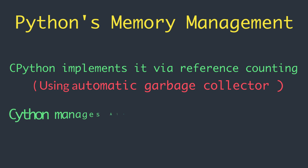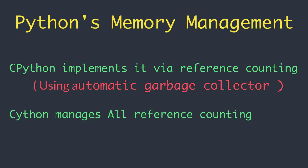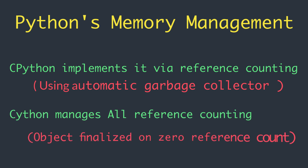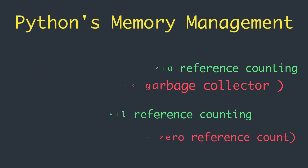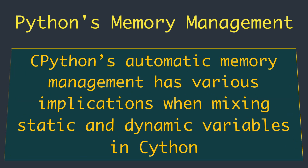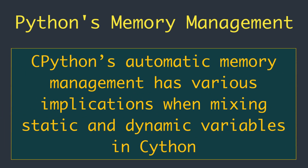Cython manages all reference counting for us, ensuring a Python object — whether statically typed or dynamically typed — is finalized when its reference count reaches zero. CPython's automatic memory management has various implications when mixing static and dynamic variables in Cython.